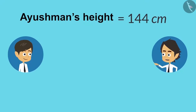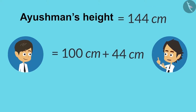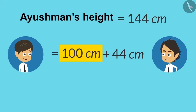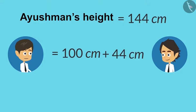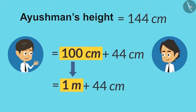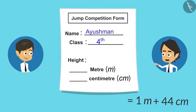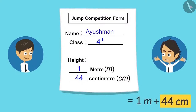See, my height is 144 centimeters. Now let's write it like this: 100 centimeters plus 44 centimeters. Now I understand — 100 centimeters equals 1 meter, so we can write 100 centimeters as 1 meter. And now I can write in the form 1 meter 44 centimeters.